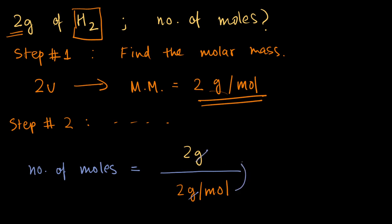The grams cancel, the mole goes up top, and this will result in one mole. So if you have 2 grams of hydrogen molecules, you'll have one mole of such hydrogen molecules.